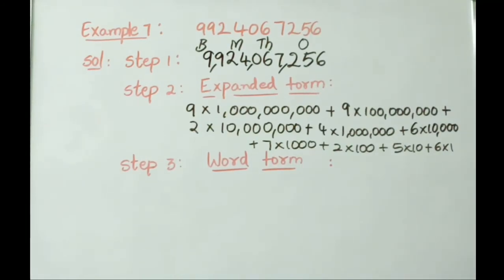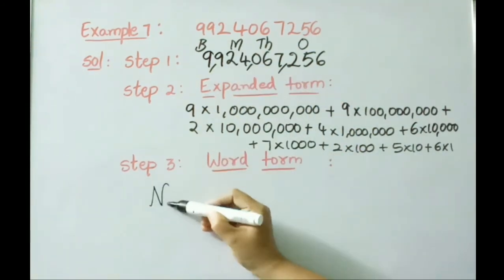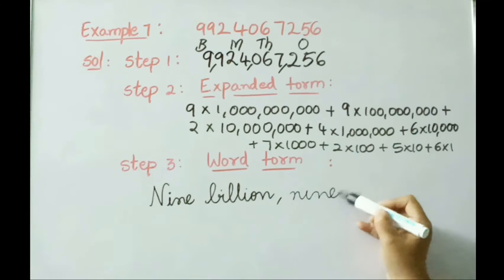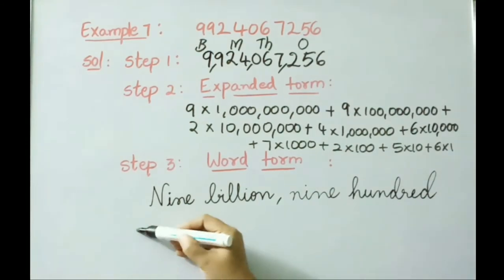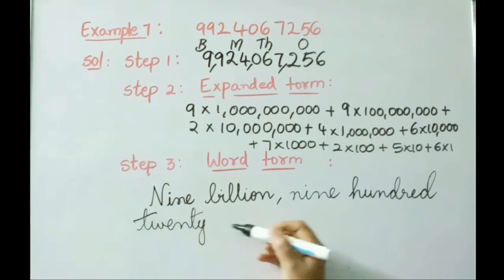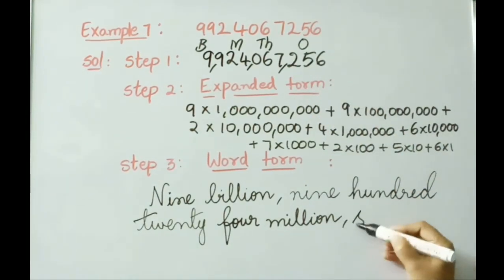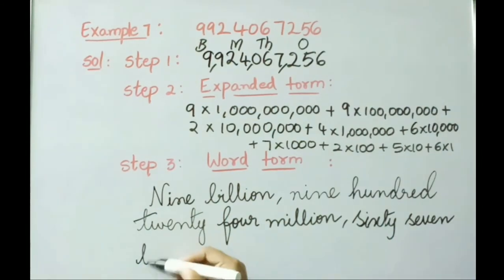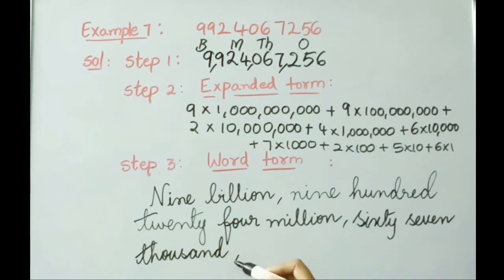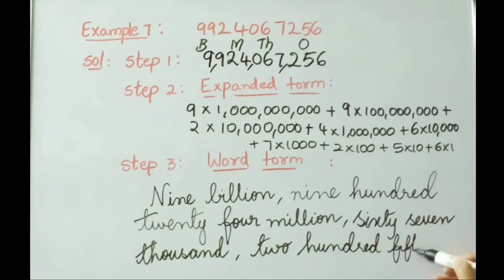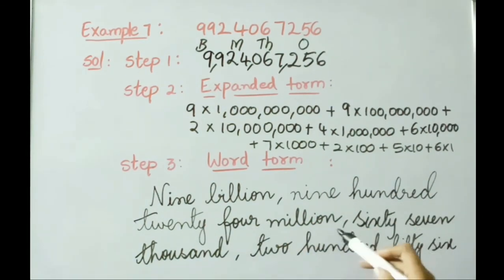Now let us write this in word form: 9 billion, 924 million, 067 thousand, 256. Reading the word form: nine billion, nine hundred twenty-four million, sixty-seven thousand, two hundred fifty-six.